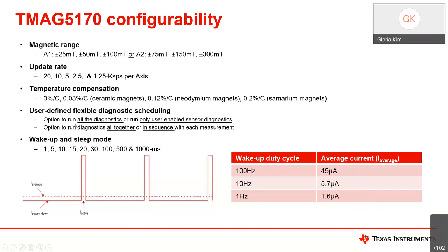The fourth configurable feature involves the diagnostic scheduling scheme for user-enabled safety measures, with four options depending on whether to run all available diagnostics or selected ones, and whether to run them in sequence or together — determined by required diagnostics, amount of measured data, and timing efficiency needed. The fifth feature is wake-up and sleep mode, one of multiple power modes, where the device sleeps and wakes at specified intervals to take measurements.